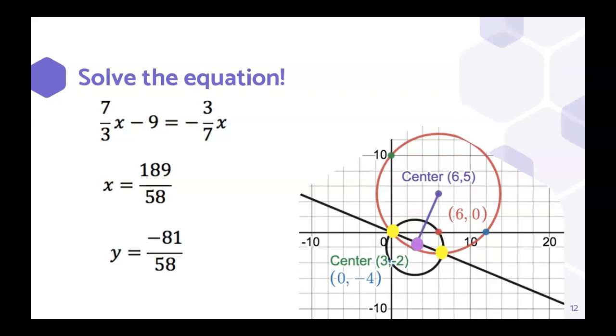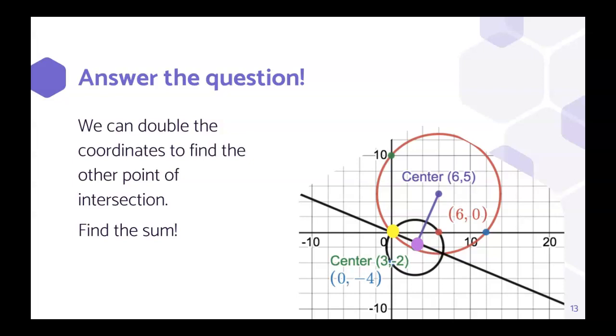That's that purple point where those lines intersect. But now we're trying to find that yellow point and answer the question. So we can double those coordinates to find the other point of intersection just because it's a consistent slope and it's the same distance going from the origin to that intersection point as it is from the intersection point to the other place where the two circles intersect.